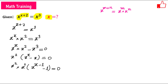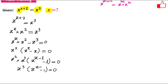Here I have 2 and here I have 1, so this is x cubed times x raised to the power x minus 1 minus 1, equals to 0. Now two possibilities: either x cubed is 0, or the other term is 0. Case 1: if x cubed equals 0, this means x equals 0, which is one solution.